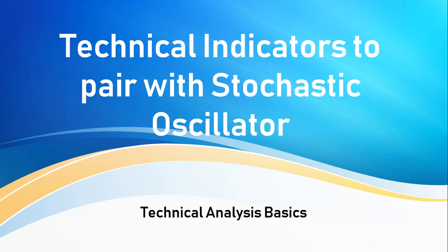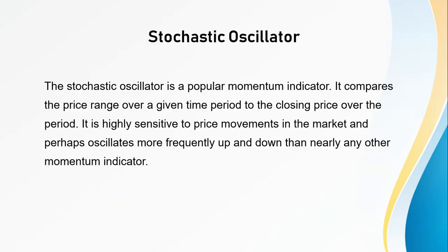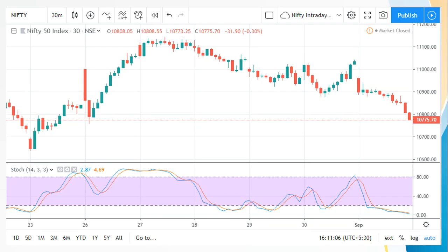Hello everyone, welcome to the Stock Trading Tutor channel. In this video we'll be looking at technical indicators to pair with the stochastic oscillator. The stochastic oscillator is a popular momentum indicator that compares the price range over a given period of time to the closing price over that same period. It's highly sensitive to price movements in the market and oscillates more frequently up and down than nearly any other momentum indicator.